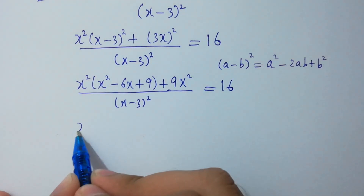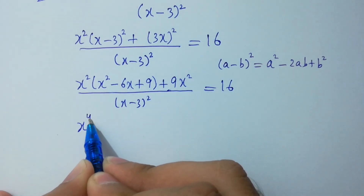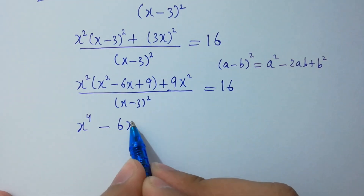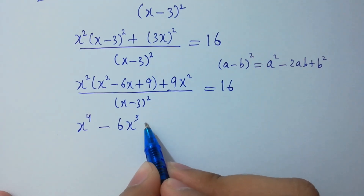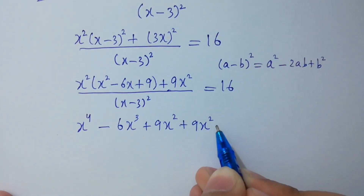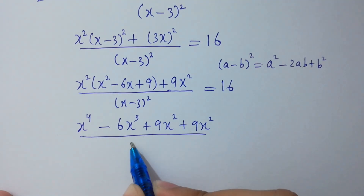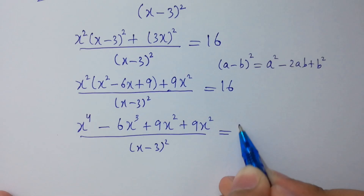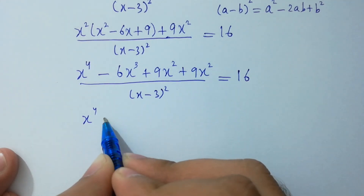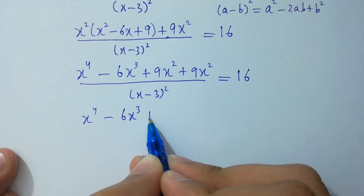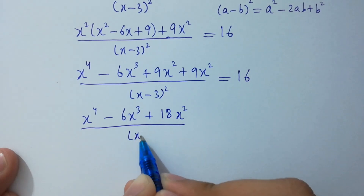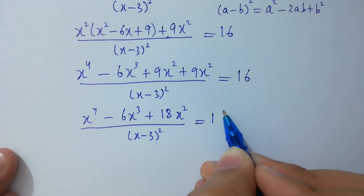Expanding further: x⁴ minus 6x³ plus 9x², and adding 9x², over (x-3). Combining x² terms gives 18x² over (x-3)² equals 16.